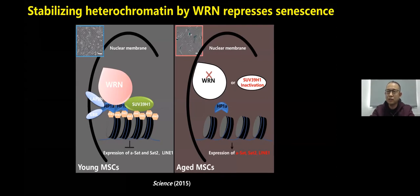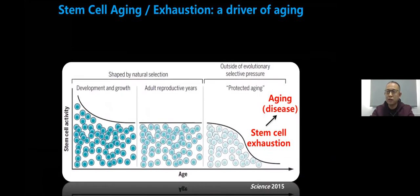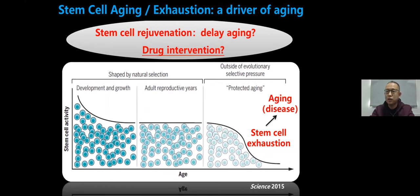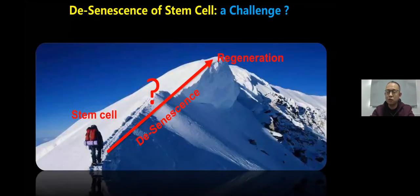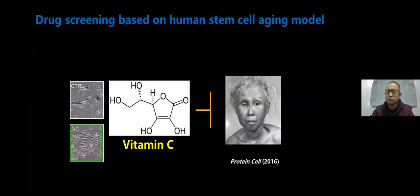We also found that stabilizing the epigenome is a common neuroprotective mechanism for human mesenchymal stem cells. Overall, we found that stem cell decay is the characteristic and driving force of aging. Therefore, we want to know how to rejuvenate aged stem cells. This process could be challenging because it may involve stem cell desenescence and epigenetic reprogramming. Since heterochromatin decondensation is a driver for cellular aging and is an epigenetic process, it may be possible to reprogram senescent cells to a younger state. Based on this idea, we screened various small molecule compounds.